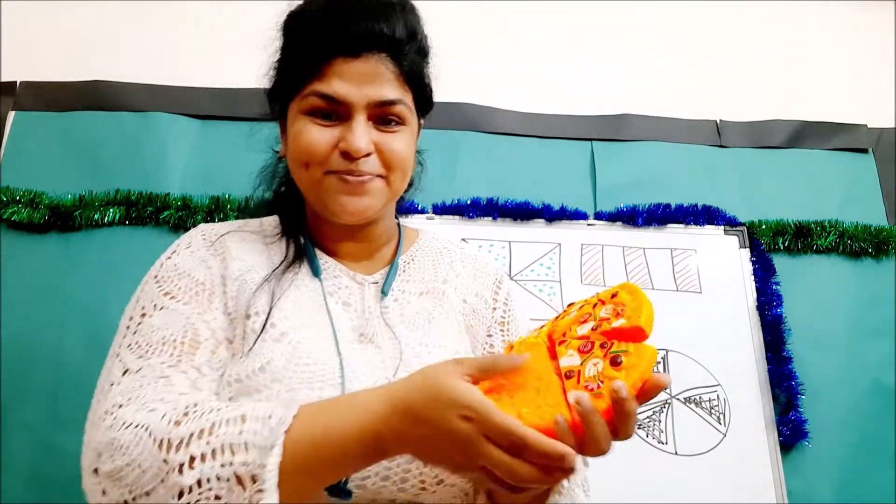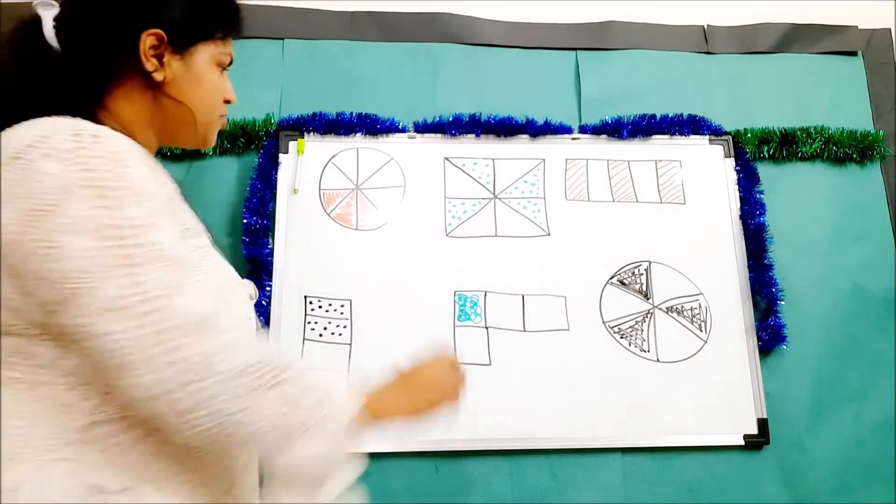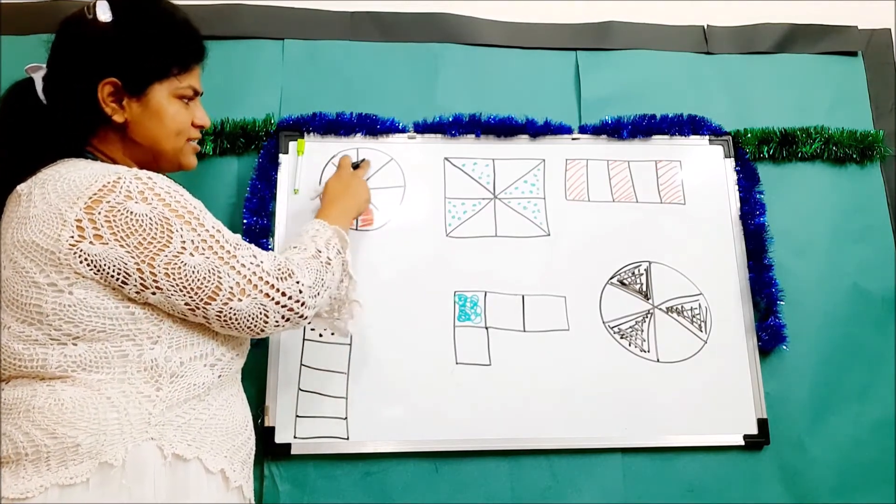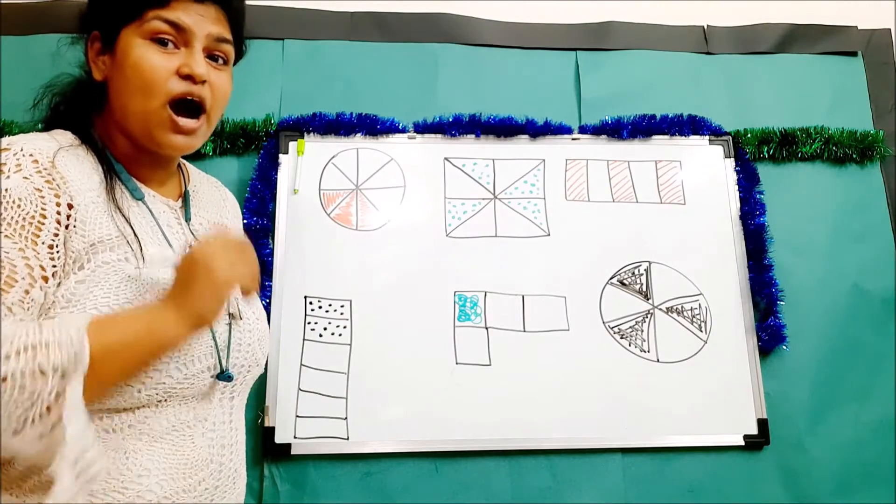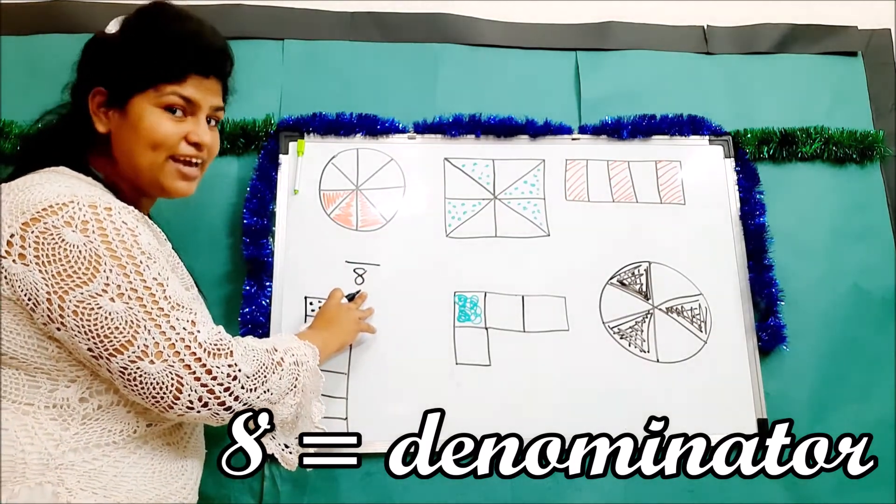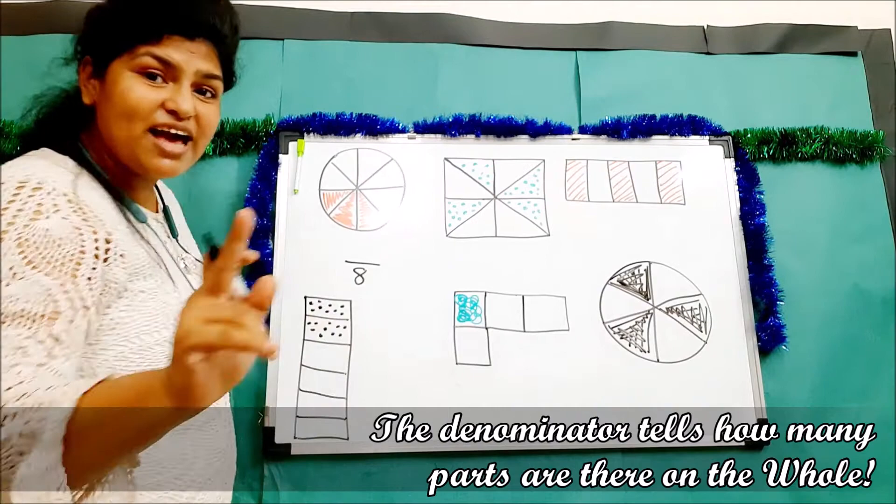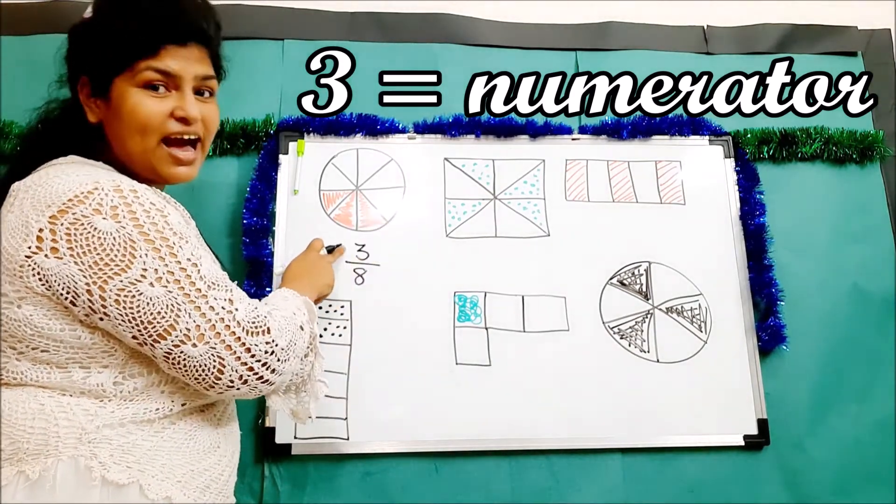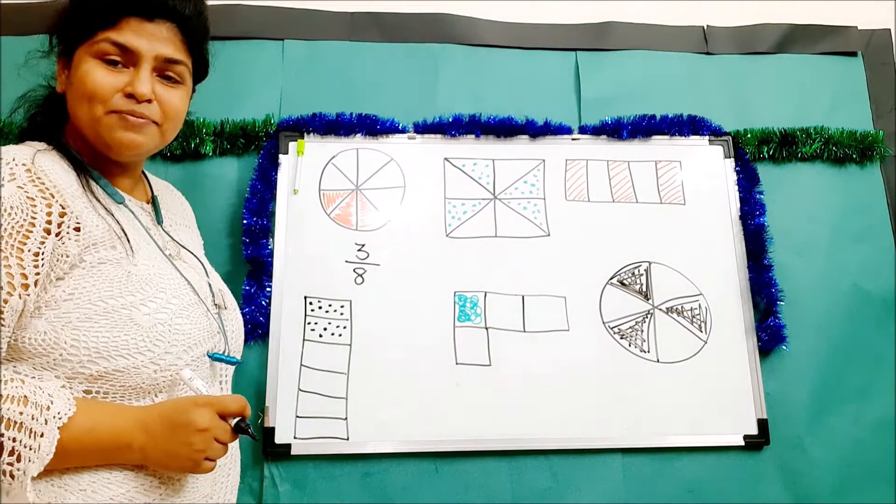Now let's try to understand with the figure. Let's see this one, the shaded portion - the one which is colored. Here how many pieces are there? One, two, three, four, five, six, seven, eight. So we have eight pieces. The denominator is eight - the whole. Out of that, how many are colored? One, two, three. So these three will say we are three out of eight.